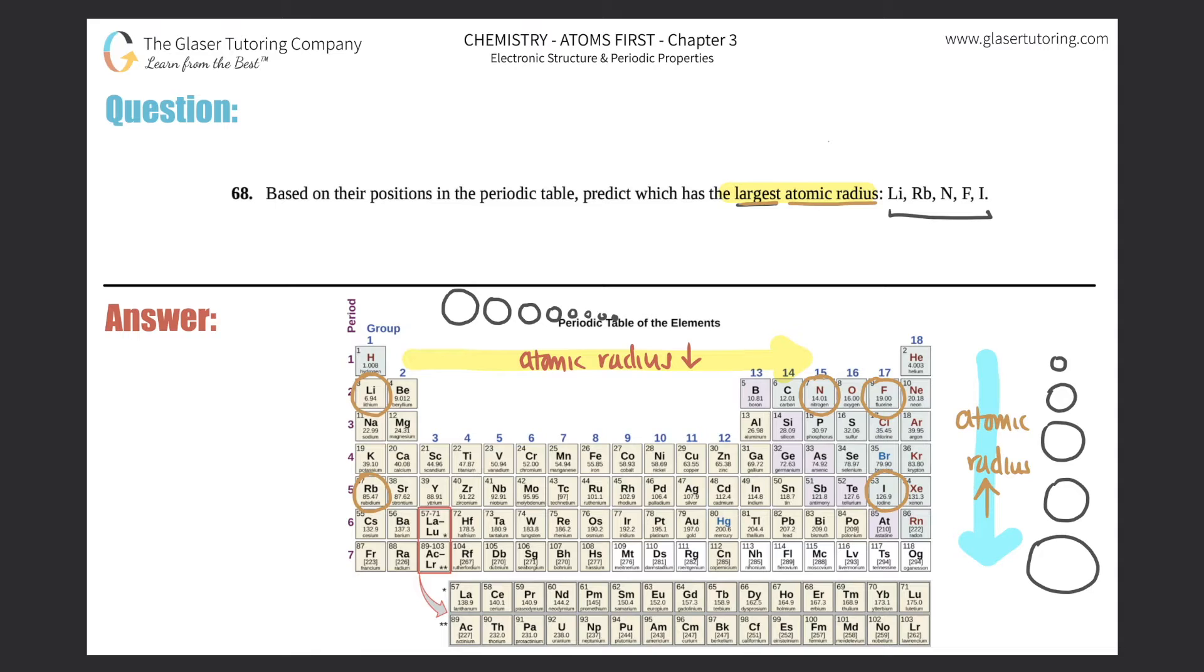We want to know the largest. I know that as I go down my periodic table, my atomic radius will increase, so the larger radii should be below on the periodic table. That basically gets rid of lithium because rubidium would be larger than lithium, and iodine would be much larger than fluorine. Nitrogen is not in the question.